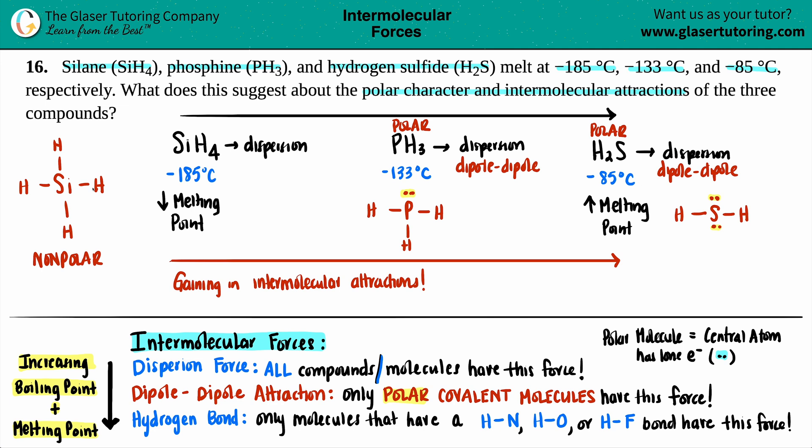For hydrogen bonding, which is the most specific intermolecular force, you just have to have hydrogens that are bound to either a nitrogen, an oxygen, or an FH bond. But in all three of these, I have my hydrogens bound to a silicon, that doesn't make the cut. Hydrogen bound to phosphorus, that doesn't make the cut. And sulfur to hydrogen, that doesn't make the cut as well. So unfortunately, none of these have hydrogen bonding.